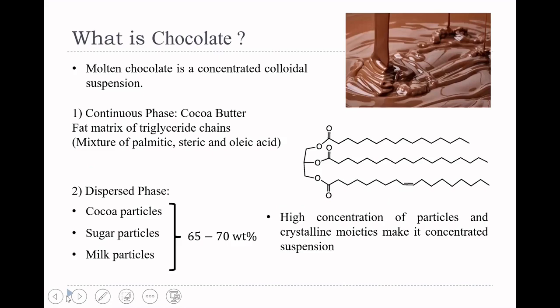Let us begin by addressing the question: what is chocolate? Molten chocolate is a concentrated colloidal suspension whose continuous phase is cocoa butter, which is a fat matrix of triglyceride chains — a mixture of palmitic, stearic, and oleic acid. The dispersed phase is cocoa particles, sugar particles, and milk particles, present at significantly high concentrations of about 65 to 70 weight percent, making chocolate a concentrated suspension.